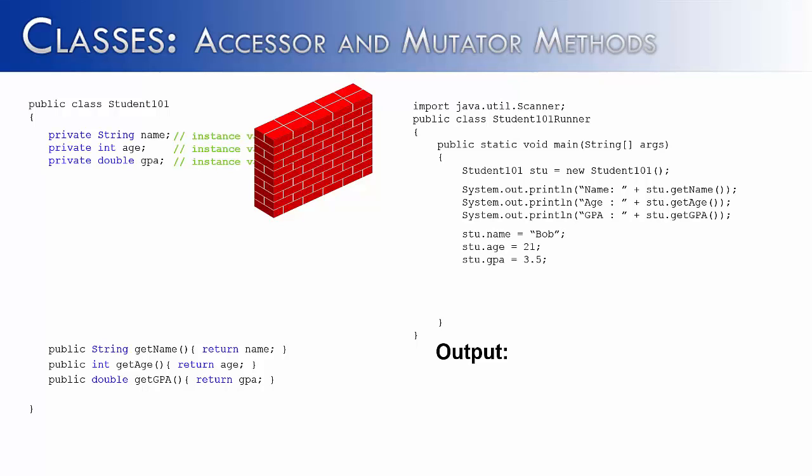What we did earlier was say stu.name equals Bob. If we tried to do that now, accessing them directly like that, we would hit our wall and our request would end up in an error saying name, age, and GPA have private access. Just like there was a method way to get around the wall to access them, there is a method way to change what their value is.